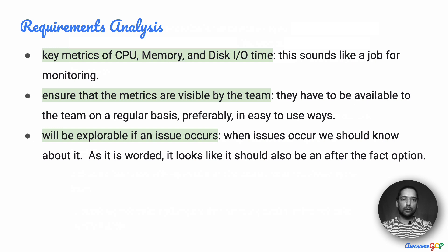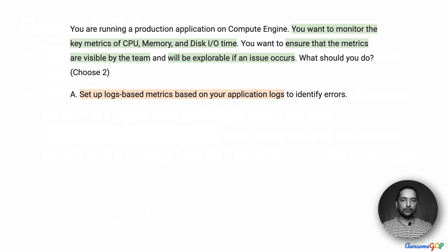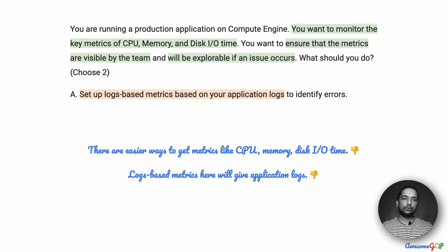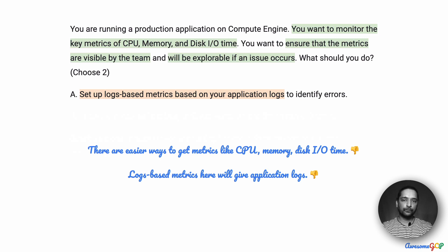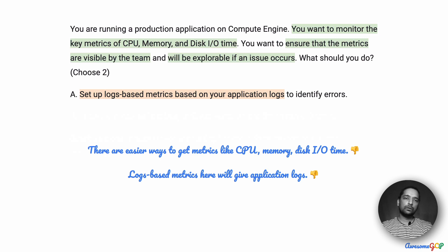With this understanding of the requirements, let's look at option A. Option A suggests setting up logs-based metrics based on your application logs to identify errors. We don't need additional logs-based metrics when there is a straightforward approach — either use the default metrics or install the monitoring agent, which gives you additional metrics. Especially for things like CPU, memory, and disk IO, it is straightforward to just use the agent. The application logs give you application-related logs, and that's not what we want — we want VM-related metrics. So we will eliminate option A.